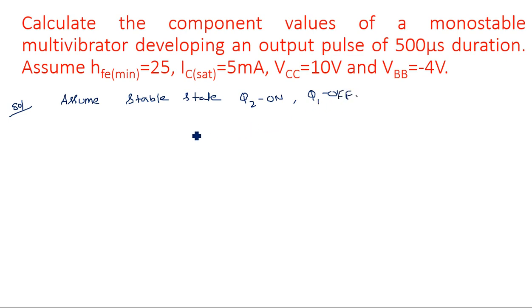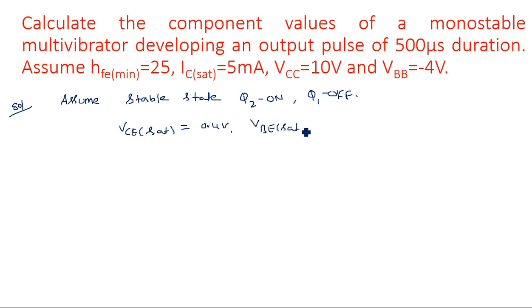We assume VCE sat = 0.4 volts and VBE sat = 0.8 volts. This is the data we should consider. First, we assume the status of the transistors: Q1 is in off state, Q2 is in on state. VCE sat and VBE sat are the saturation voltages we are assuming.